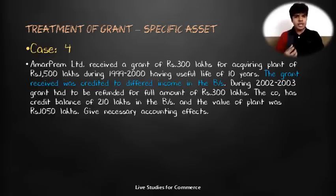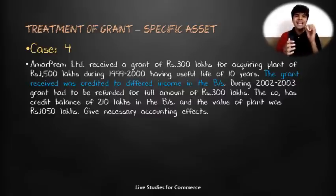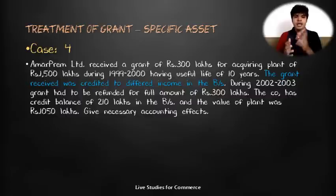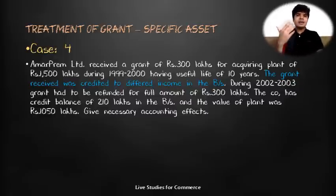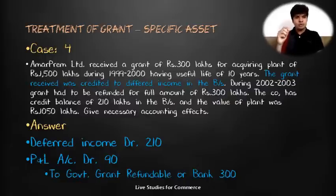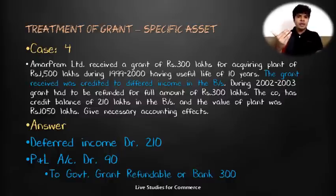Let's understand with the Amar Prem Limited case. The company received a grant of ₹300 lakhs for a plant costing ₹1,500 lakhs (useful life 10 years) in 1999-2000, credited to deferred income. In 2002-2003, the full ₹300 lakhs had to be refunded; deferred income balance was ₹210 lakhs and plant value was ₹1,050 lakhs. The entry is: Deferred Income Account Dr. ₹210 lakhs, Profit & Loss Account Dr. ₹90 lakhs (₹300 - ₹210), To Government Grant Refundable / Bank ₹300 lakhs.